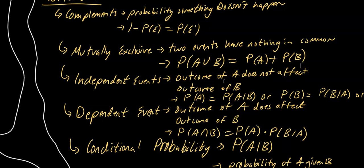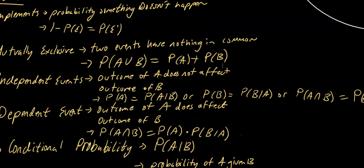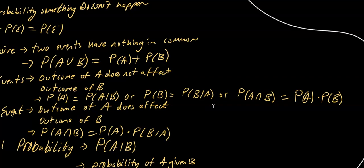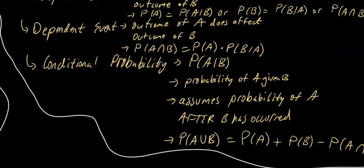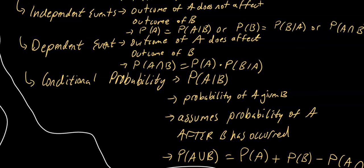Independent events means that the outcome of the first event, let's call it event A, does not affect the outcome of event B. There are three ways that we can prove this, as we see here. Using conditional probability is probably easiest, and we'll learn that in a second. Now, a dependent event is obviously just the opposite of an independent event, and it means that the outcome of the first event will affect the second event. This is how we calculate that.